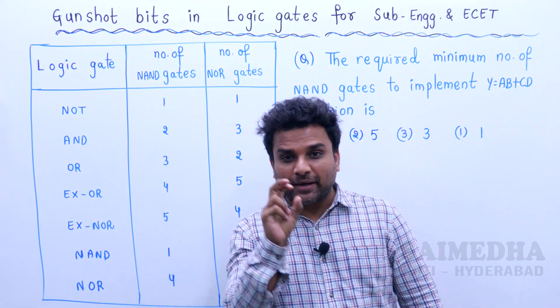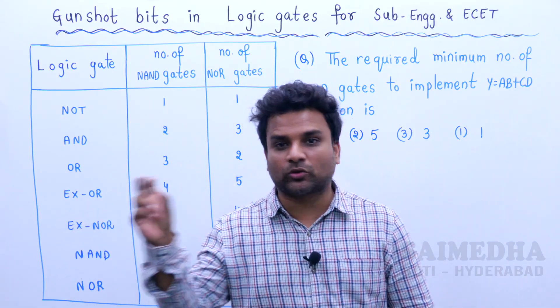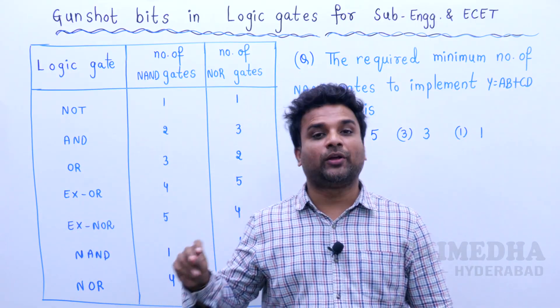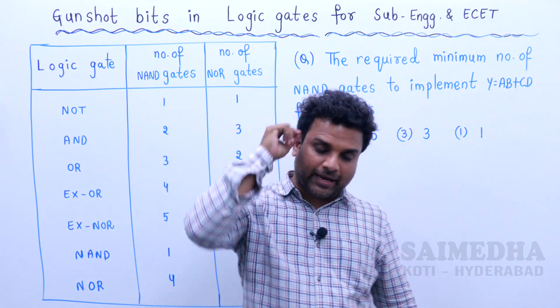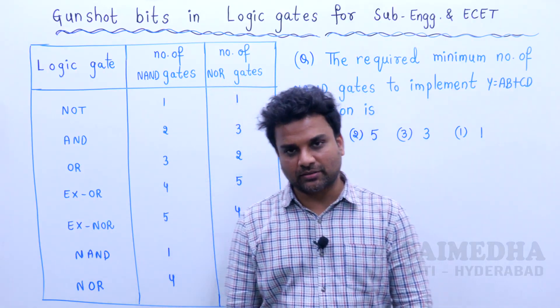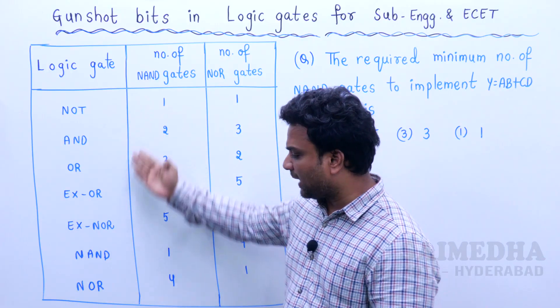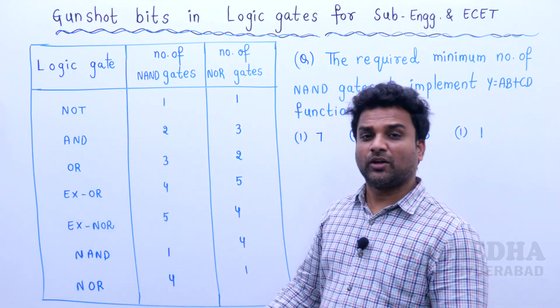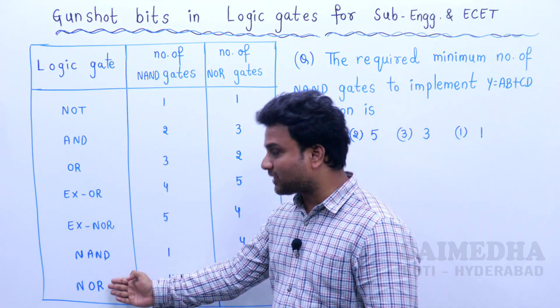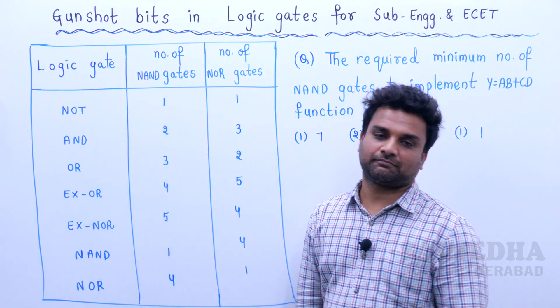What basic gate do you want to realize? XOR gate? XNOR? What gate do you want to do? You can do any gate — XOR gate, XNOR — what do you want? You can even do NAND gate using NAND gates.